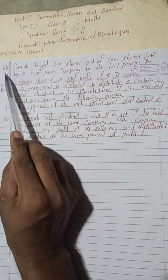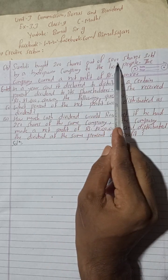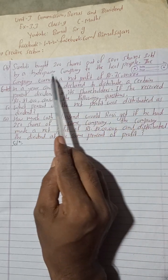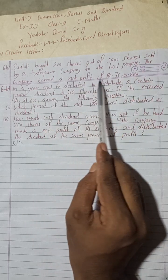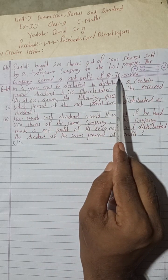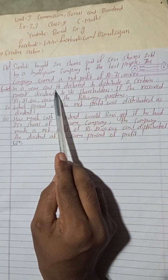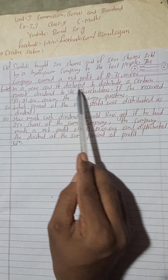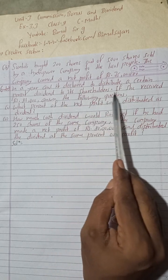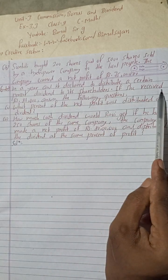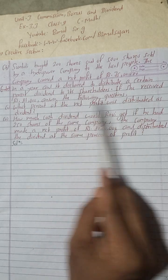Now let's begin the solution. Question 6B: Sunthali bought 200 shares out of 5,000 shares sold by a hydropower company to the local people. The company earned a net profit of Rs 75 lakh in a year and declared to distribute a certain percent dividend to its shareholders. If she received Rs 81,000...